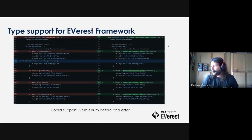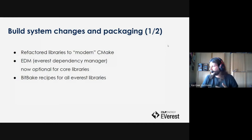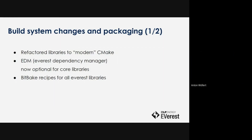That's pretty much it about type support. Over to Anton, who will talk a little bit about our efforts in the CMake department. EVerest itself contains multiple libraries, all written in C++, and the build system we chose is CMake. What was done in the last week was basically refactoring some of the CMake files so that they adhere to the so-called modern CMake standard, which means it's now much easier to use these libraries in external projects and makes it easier for the build system to link to these libraries.